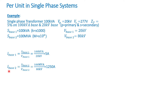Now I_base2 equals S_base2 divided by V_base2 — that's 100 MVA divided by 80 kV. We need to be careful with units: M is 1 million and K in the denominator is times one thousand. Carrying out the calculation gives 1,250 amps.